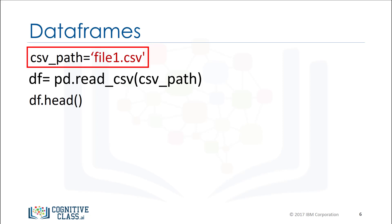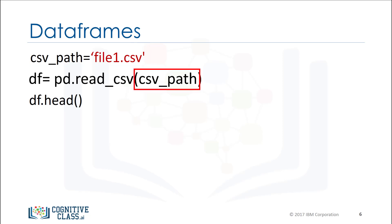This variable stores the path of the CSV. It is used as an argument to the read_csv function. The result is stored to the variable DF, which is short for data frame. Now that we have the data in a data frame, we can work with it.